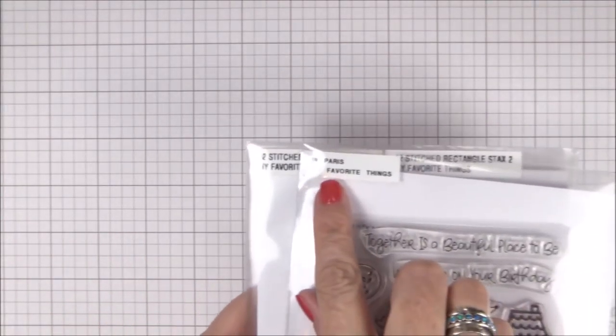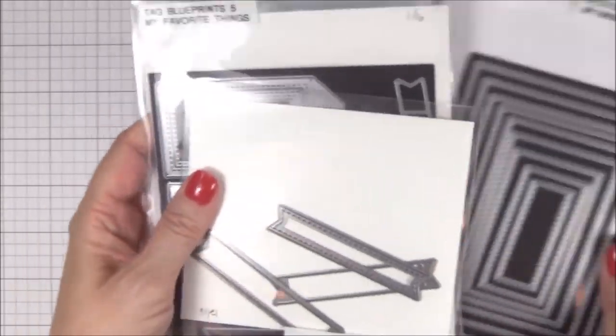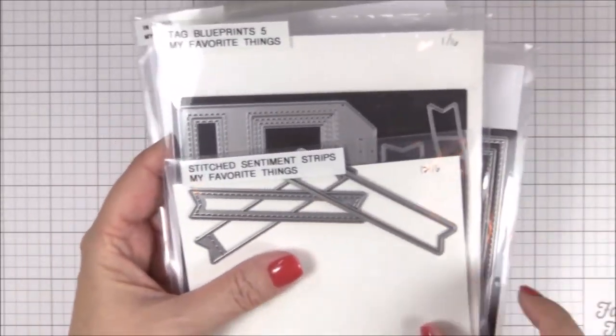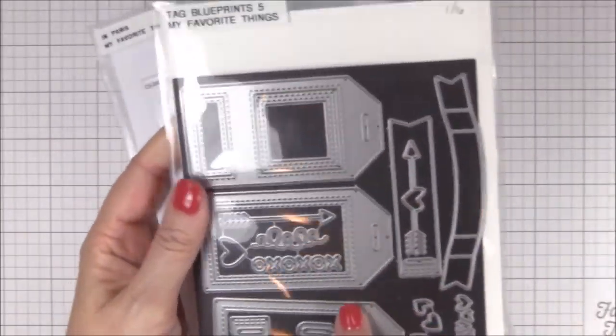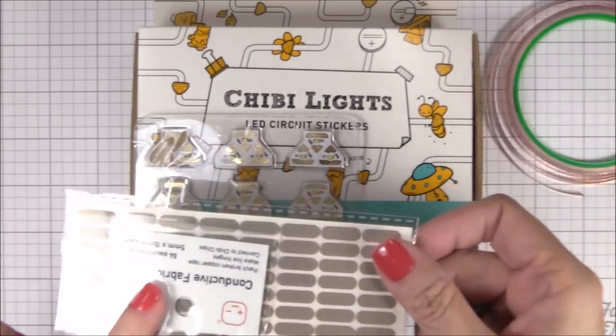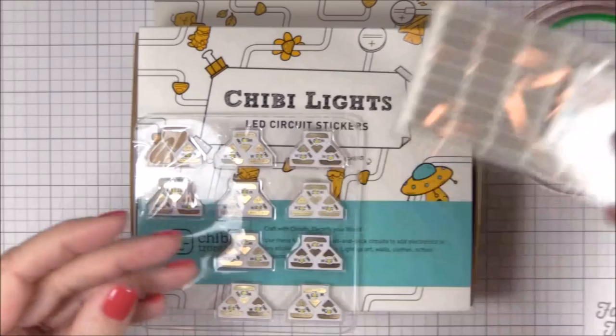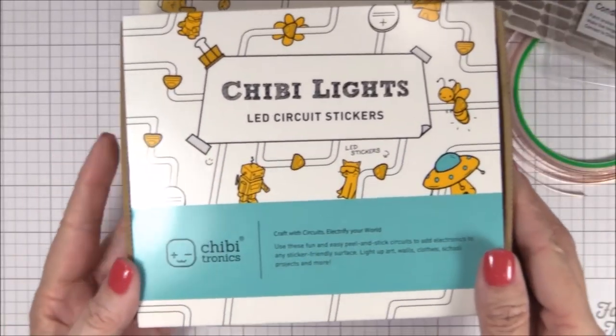My project features the In Paris stamp set, the A2 stitch rectangle stack set 1 dynamics, the stitch sentiment strips dynamics, and the Tag Builder Blueprints 5 dynamics. I'm also using the copper tape, the conductive fabric tape, white LED light stickers, and a CR2032 battery, all from Chibitronics. Most of these items can be found in the Chibi light starter set.